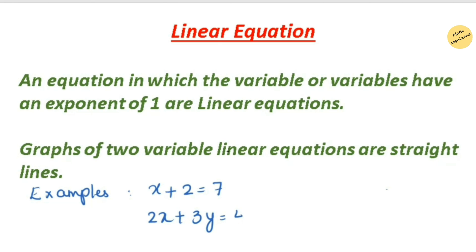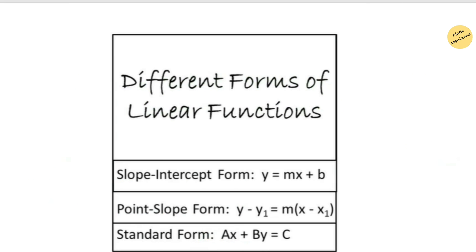Another example is 2x plus 3y equals 4, where there are two variables x and y each with a power of 1. And y equals negative 2x plus 10 is also a linear equation. All of these examples have an exponent of 1, meaning the degree is 1.